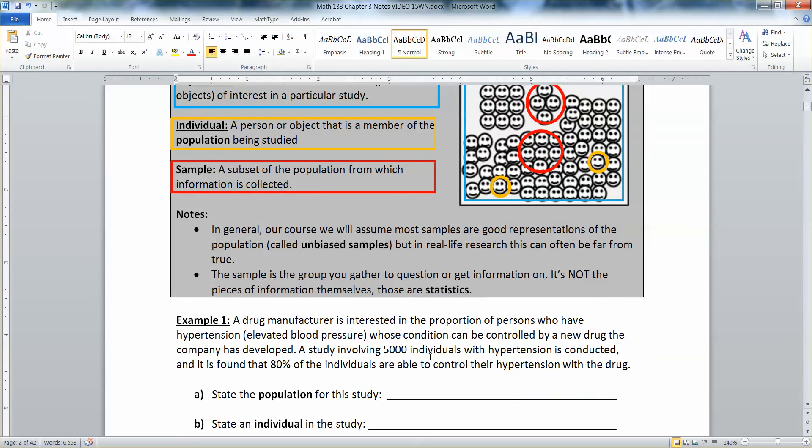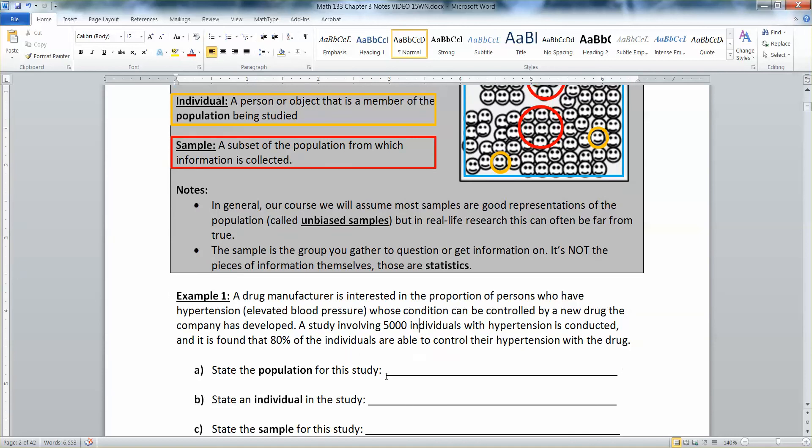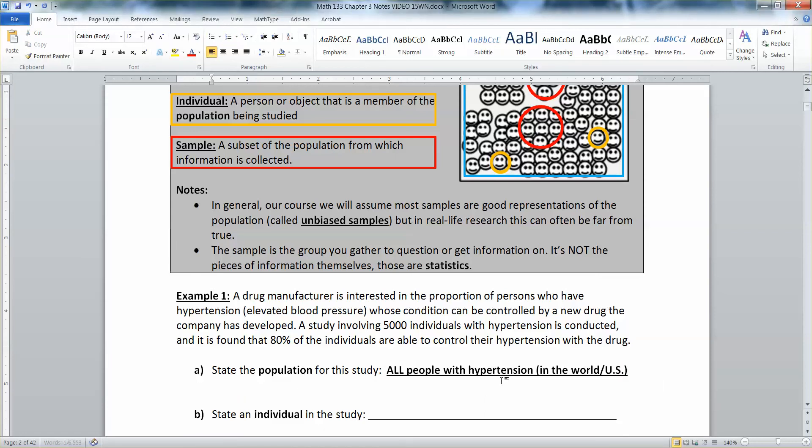If we're looking at this, this is people with hypertension, high blood pressure. Now the study involves 5,000 individuals with hypertension. So that's the sample is the 5,000 individuals, but the population, it's a little unclear, but it would probably be all people with hypertension, maybe in the U.S. or the world, something like that.